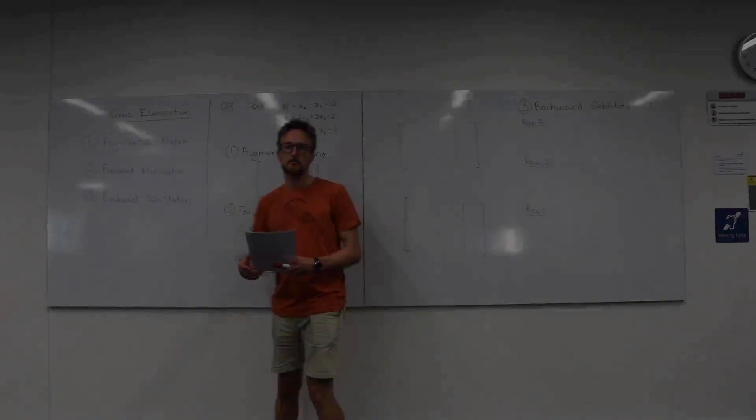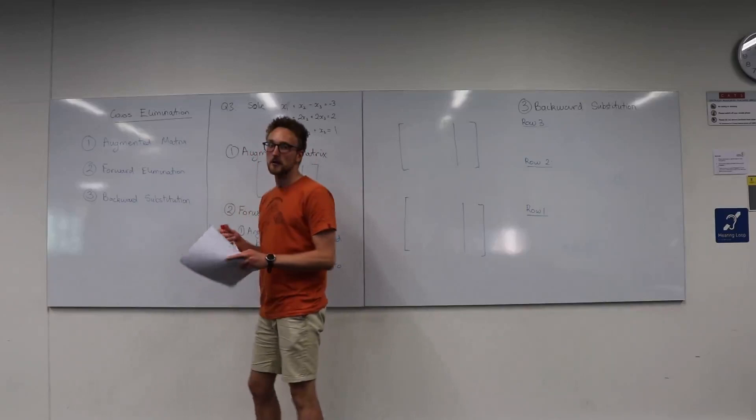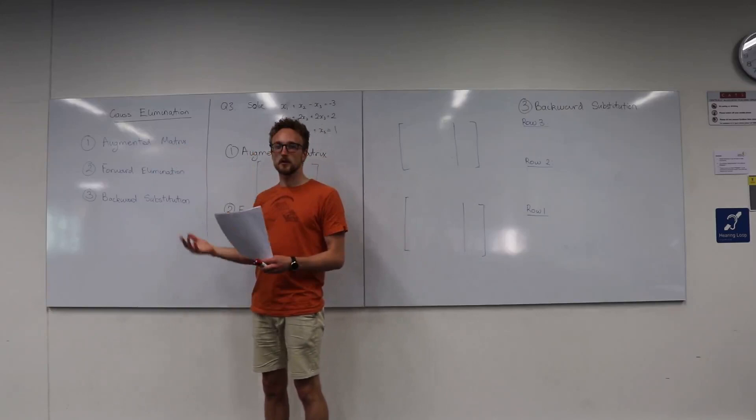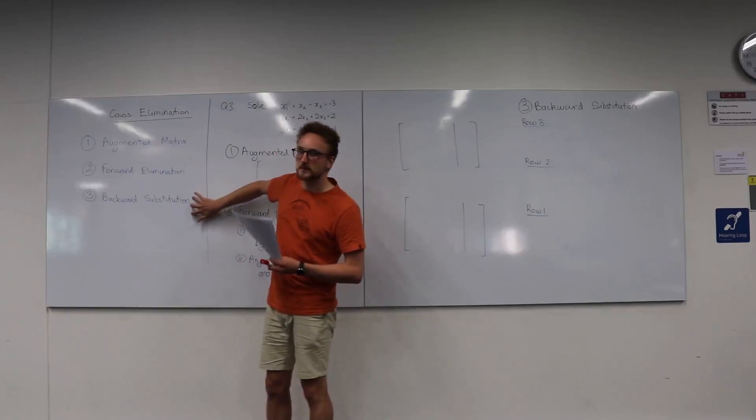We're going to kick things off with Gaussian elimination, which you would have seen in first year maths already. We start off by transforming our system of linear equations into an augmented matrix. Then using forward elimination we'll simplify those equations, and backward substitution will solve those simplified equations.